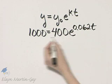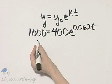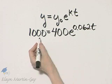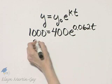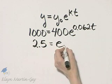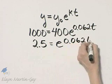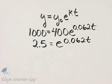Let's begin by dividing both sides by 400. On the left side, we'll have 1,000 divided by 400, and 1,000 divided by 400 is 2 and 5 tenths, and that's equal to E raised to this power of 62 thousandths T. Now, I've got 2 and 5 tenths is equal to E raised to that power.